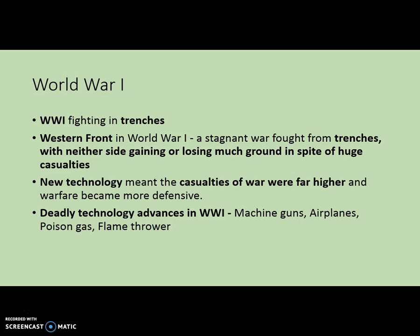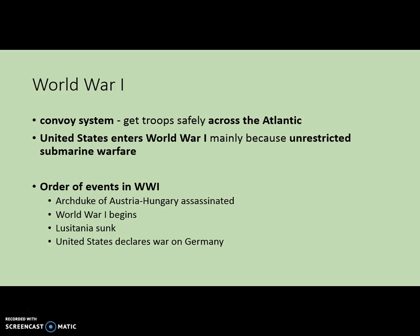For World War I, always think about trenches — trench warfare becomes very popular during the war. The Western Front was where both sides, the Germans and the French and the Allies, fought over very small amounts of land, often with huge casualties. New weapons and new technology caused casualties to be far higher and war to become more defensive. New technology included machine guns, airplanes, poison gas, and the flamethrower — all of these led this war to be the deadliest in history up until that point.